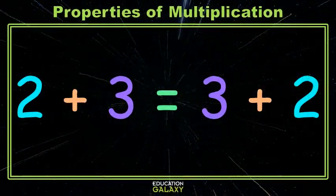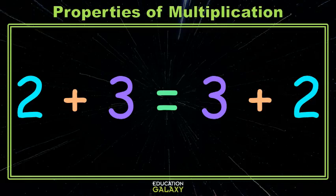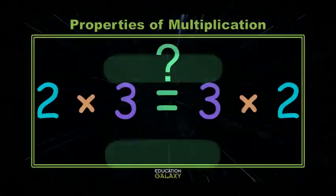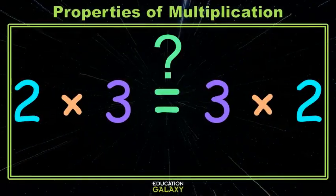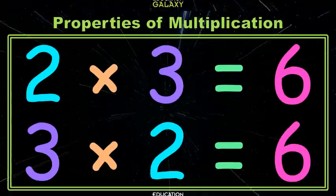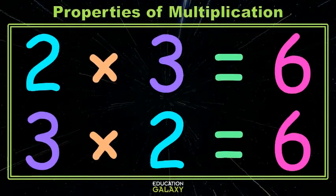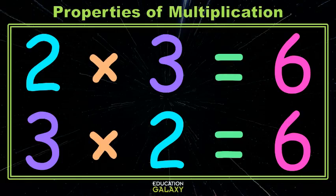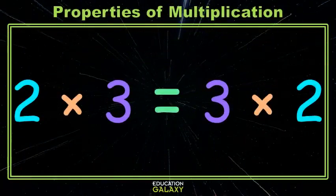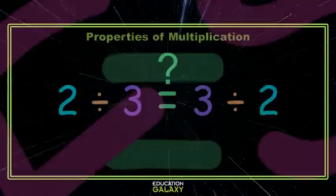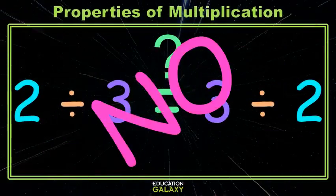You remember back in the day when we learned that 2 plus 3 is really the same value as 3 plus 2. We could add in either order. And then did you say to yourself, self, could I do that with multiplication? Well, in this case, 2 times 3 equals 6 and 3 times 2 equals 6, so it does work. Does it work for all numbers that we multiply? Yes, it does. And if you're wondering if it works for division, no, it doesn't. Okay, moving on.